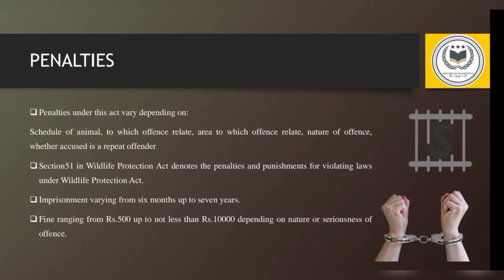Penalties for violation of the law under this act depend on various factors: the schedule under which the animal, bird, or plant belongs; the area to which the offense relates; the nature of the offense; and whether the offender is a first-time or repeat offender. Imprisonment can vary from six months up to seven years depending on the offense. Fines range from rupees 500 to rupees 10,000 and even more depending on the nature of the offense.